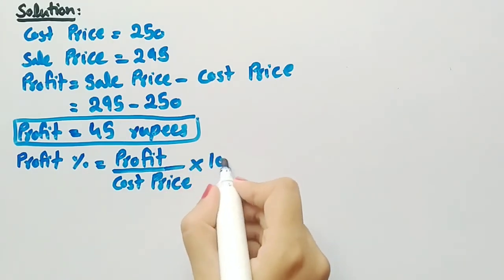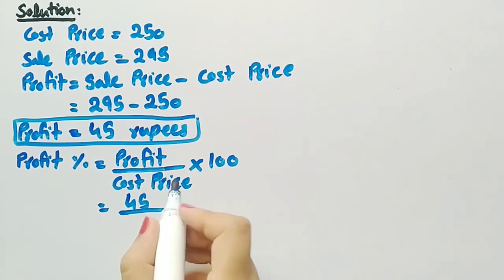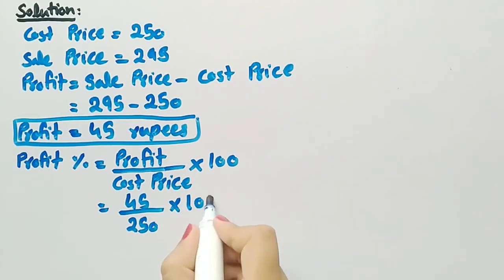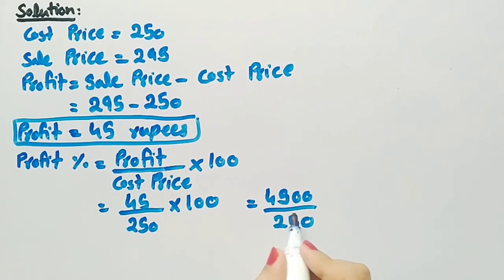Substituting the values, profit is 45 divided by cost price is 250 multiplied by 100. When we multiply 45 by 100 we get 4500 divided by 250. When 4500 is divided by 250 we get 18.